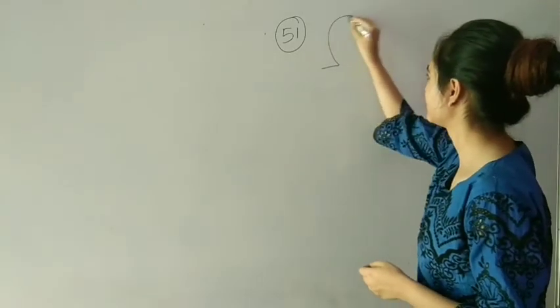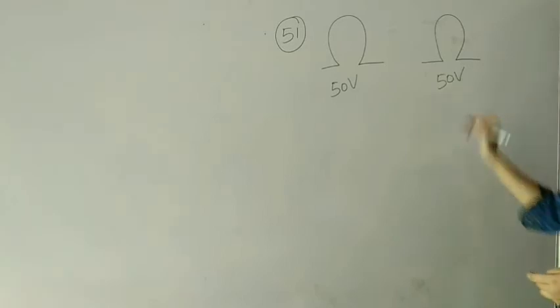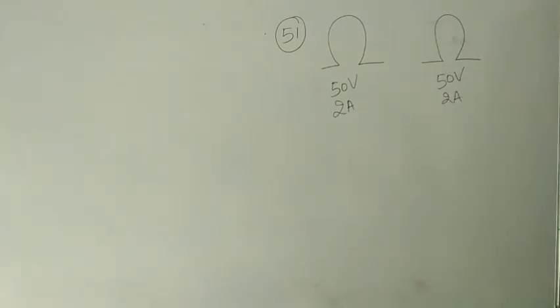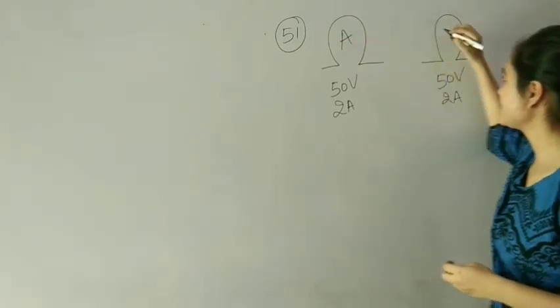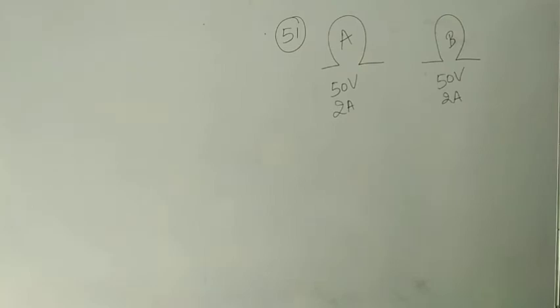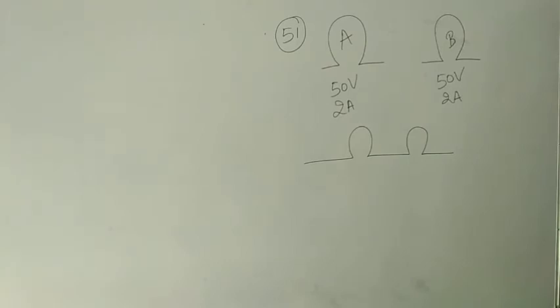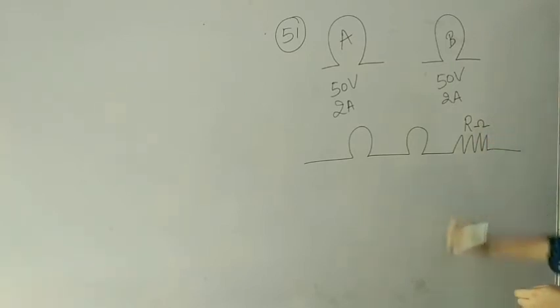Our next question: each of the two bulbs takes two ampere current at 50 volt supply. There are two bulbs — if we connect bulb A to 50 volt it takes 2 ampere current, and bulb B also takes 2 ampere. They are joined in series. How much resistance should be added in series with the lamps? Let's suppose R ohm resistance is added.